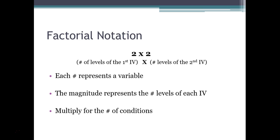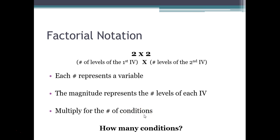In factorial notation, the first number represents the number of levels of the first independent variable, and the second number represents the number of levels of the second independent variable. Each number represents a variable and the magnitude of that number represents the levels of each independent variable. You multiply these numbers together to get the total number of conditions or groups.